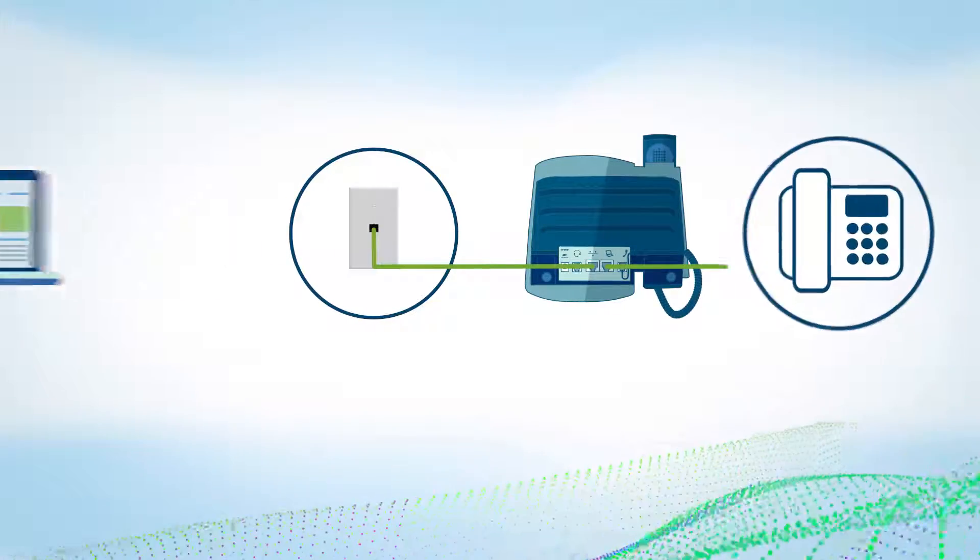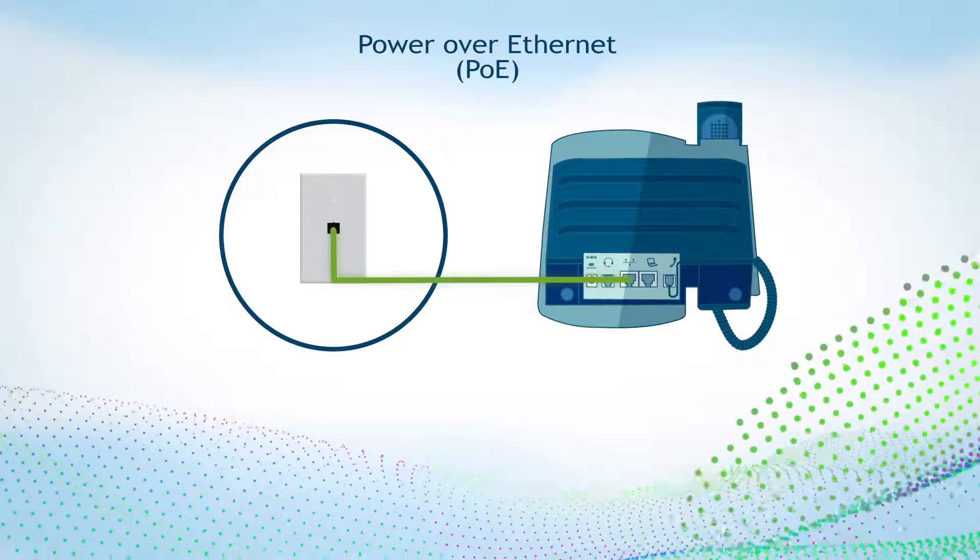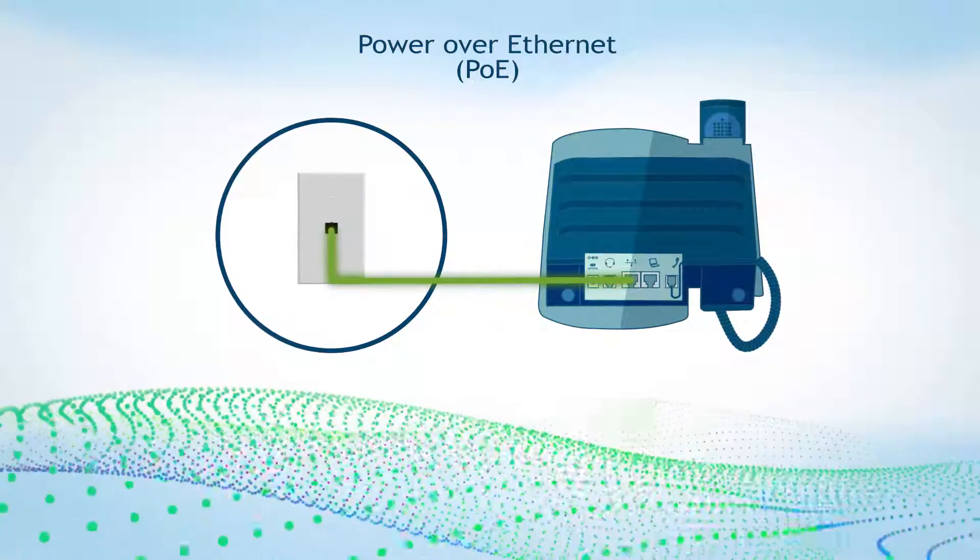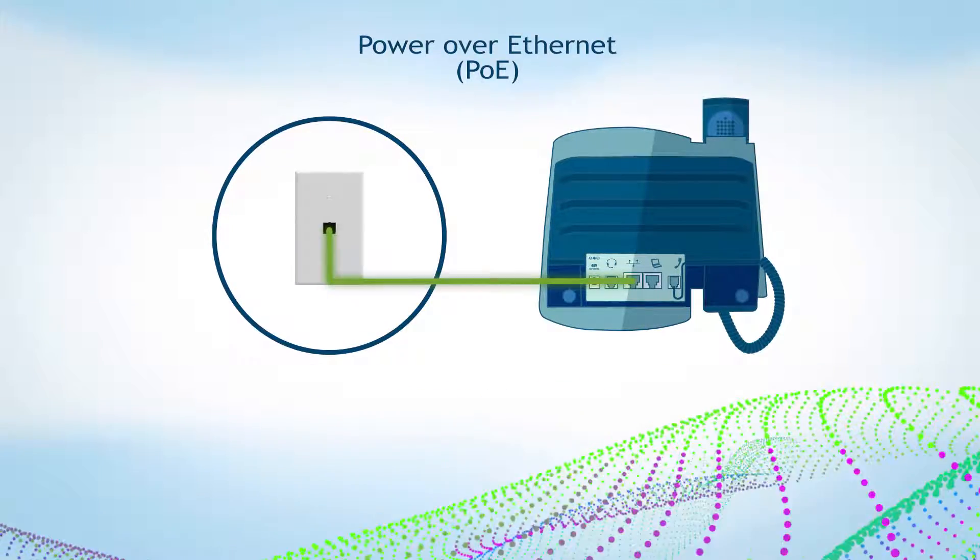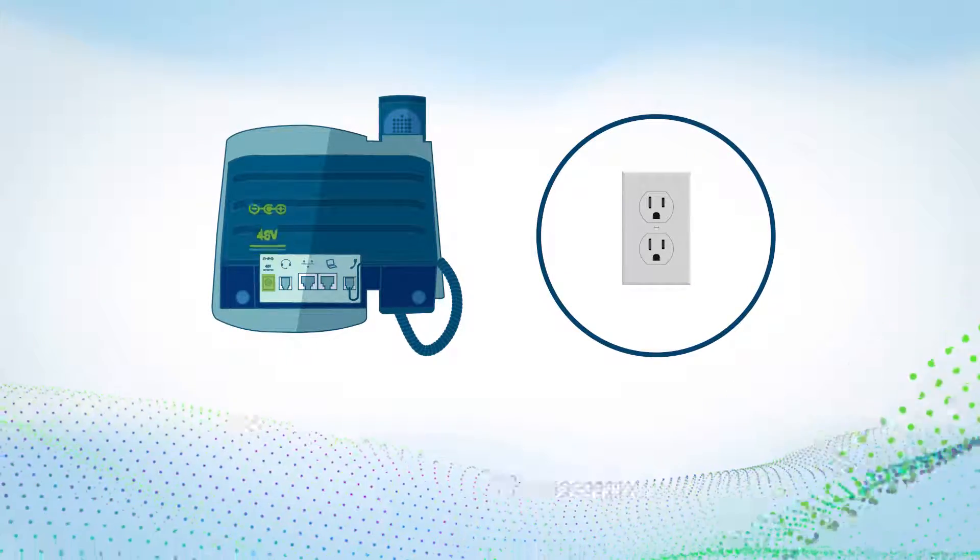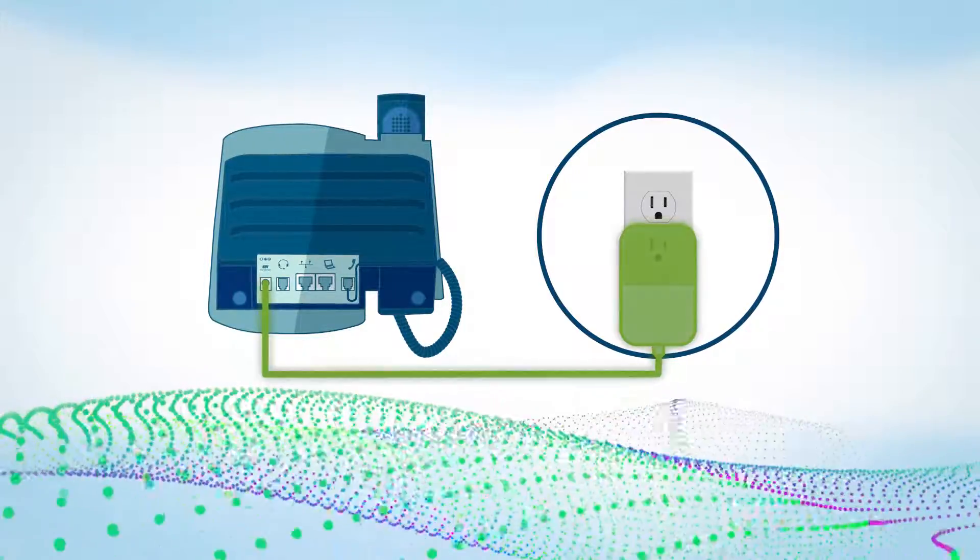Some networks provide power over Ethernet. This means the phone gets power through the Ethernet cable once it's been connected to the network. If power over Ethernet is available on your network, the phone will automatically turn on. If not, use the provided AC power adapter. Plug one end into the phone marked 48V and the other into a nearby AC outlet.